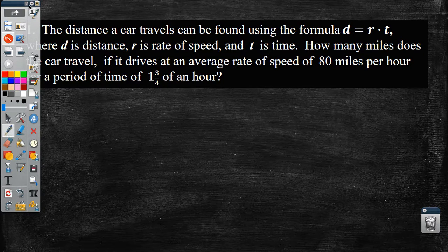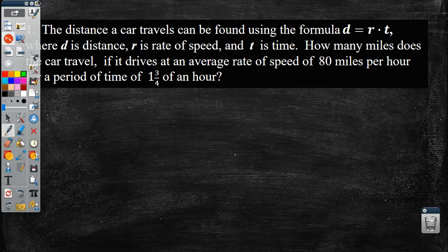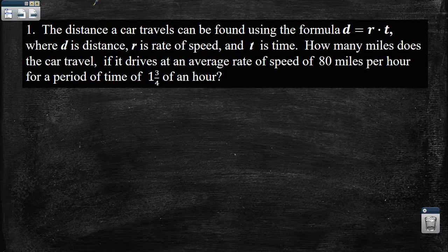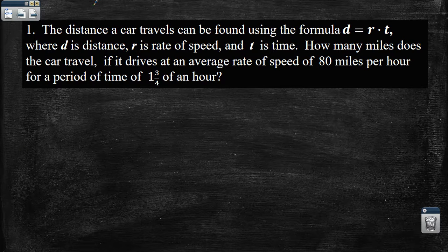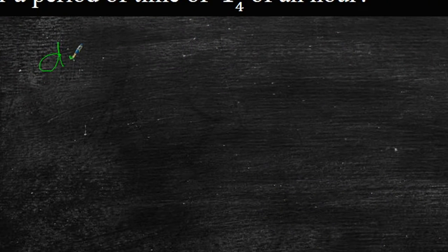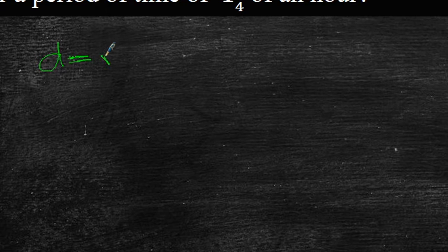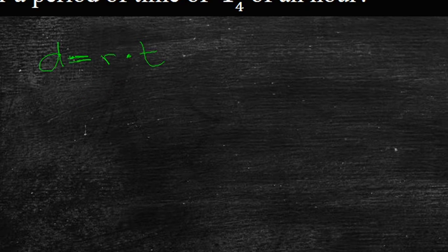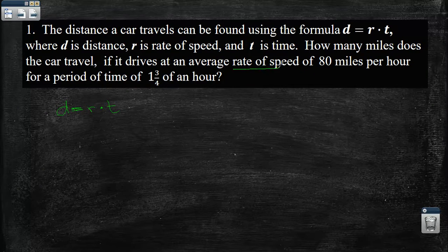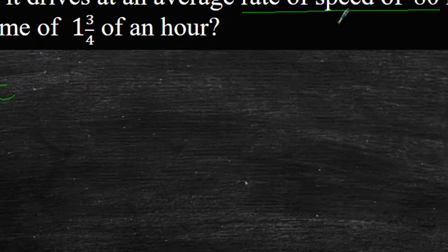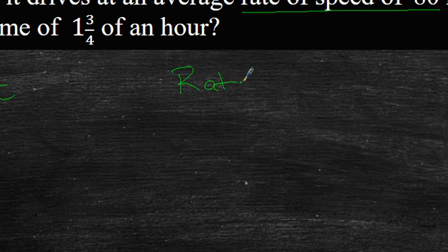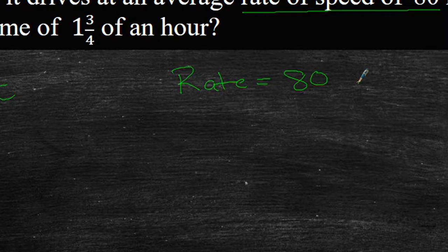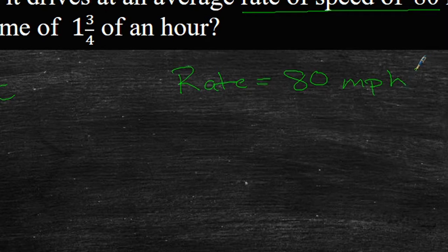Let me grab a pen real quick. Let's get a color that you should be able to see. So let's talk about a couple different things. They have given us a formula here. D is equal to R times T. Sorry, I know my handwriting is sloppy, but it's hard to write on this thing. So if you look, they have given us a rate of speed here. We're going to put that right here. Rate is 80 miles per hour.